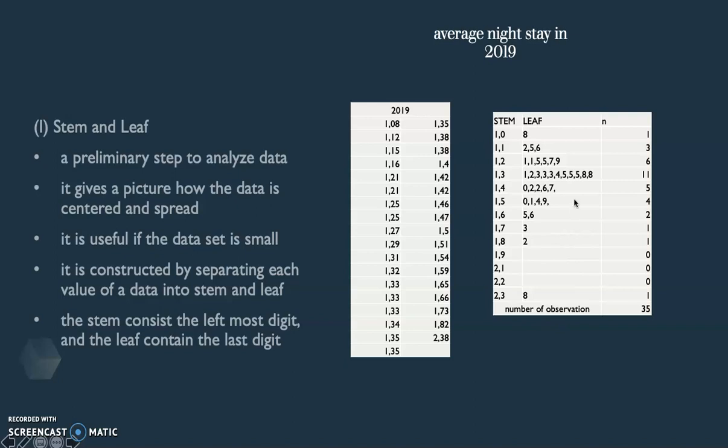So that's about stem and leaf. You can see how it is distributed. You can see which class has the most numbers. And then you can also predict the numbers from each class.